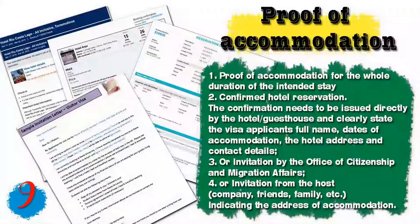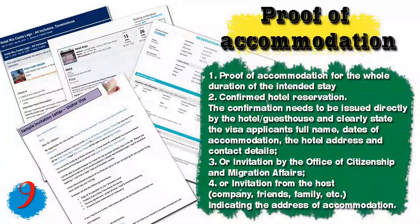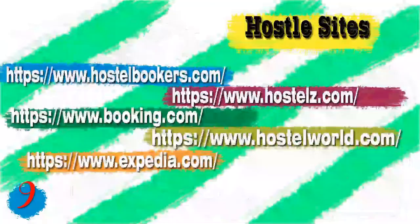Number nine, you will need a proof of accommodation for the whole duration of your intended stay. It should be a confirmed hotel reservation issued directly by the hotel or guest house, clearly stating the visa applicant's full name, dates of accommodation, hotel address, and contact details. If you don't have a hotel reservation, you will need an invitation from the office of citizenship and immigration affairs, or an invitation from a host — which can be a company, friends, or family — indicating the address of accommodation.